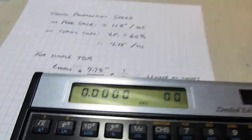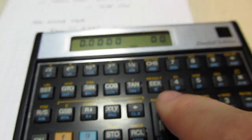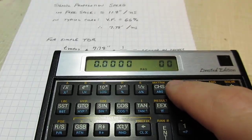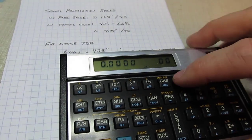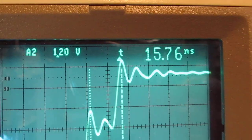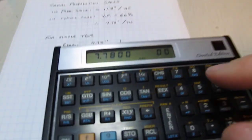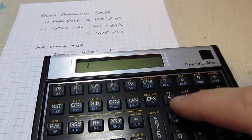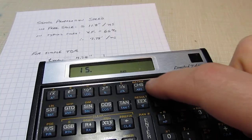If we take our calculator, seven point seven eight, and we measured fifteen point seven six nanoseconds. So if I take fifteen point seven six and multiply them together and divide that by two...